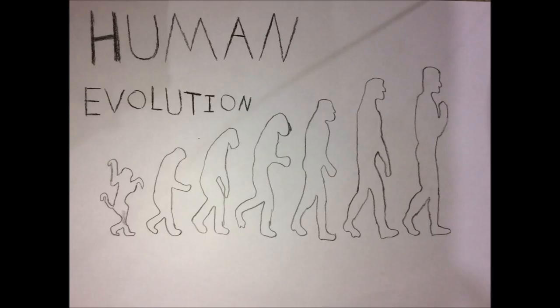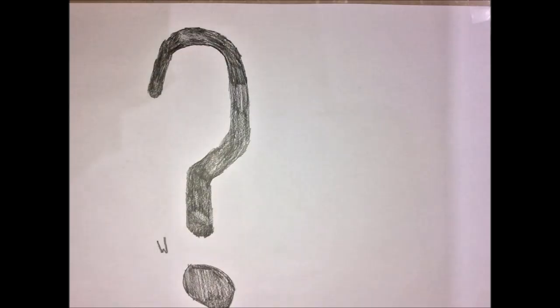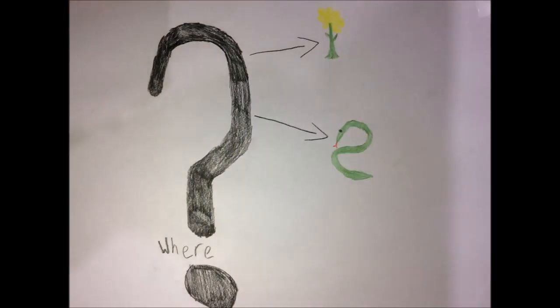One of the earliest defining human traits, bipedalism—the ability to walk on two legs—evolved over four million years ago. Where does evolution happen? Well, evolution occurs in many different things like plants and animals. These changes can be seen if you compare an animal or plant to what it looked like one million years ago and what it looks like today.